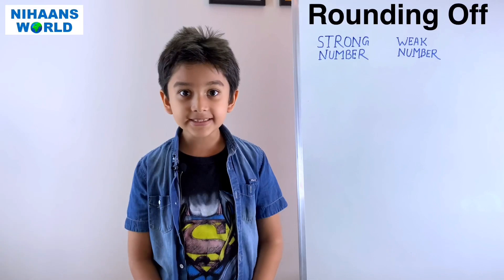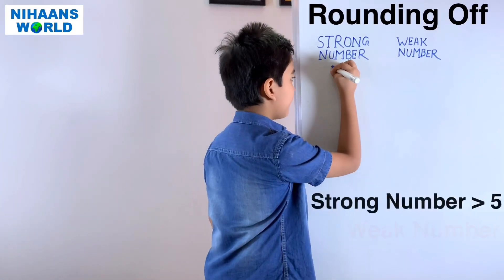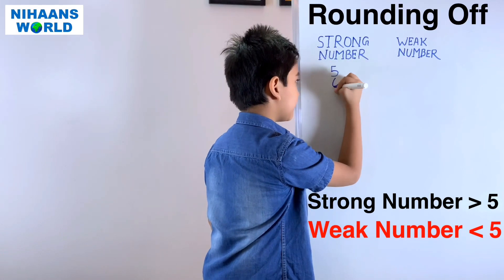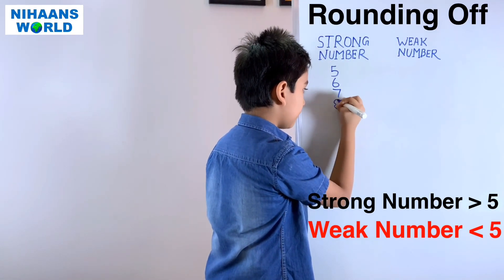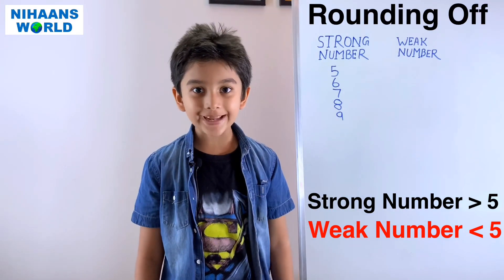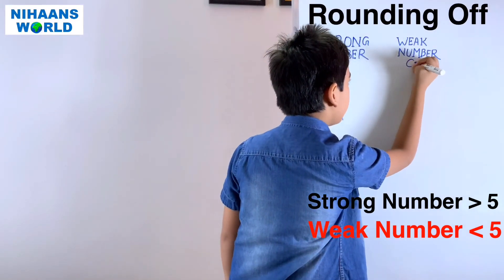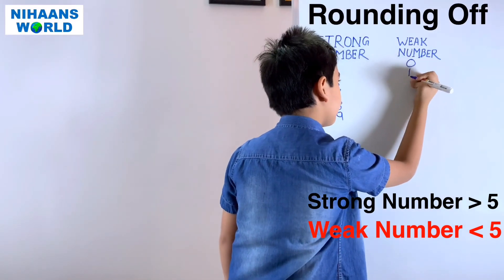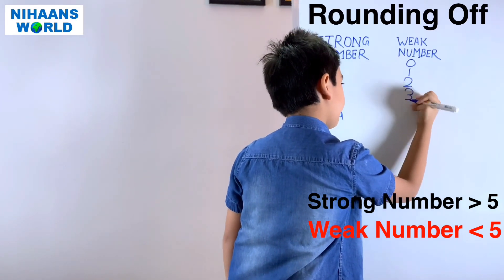Friends, let's know about strong numbers and weak numbers. What are strong numbers? Five, six, seven, eight, nine. What are weak numbers? Zero, one, two, three, four.